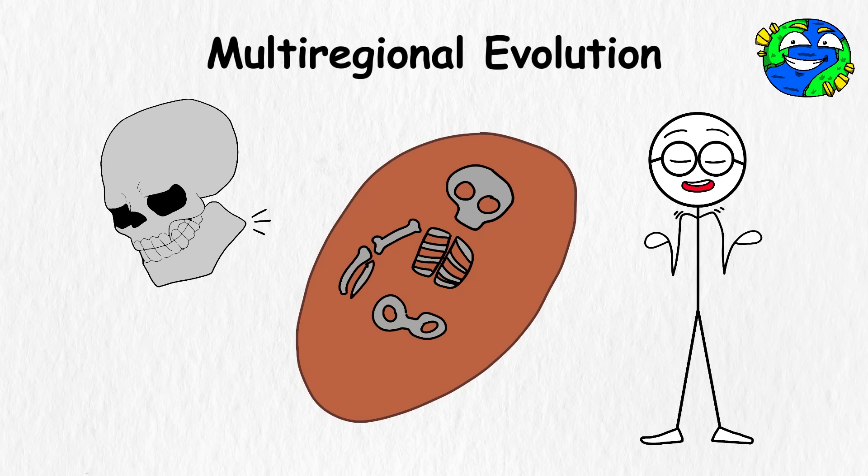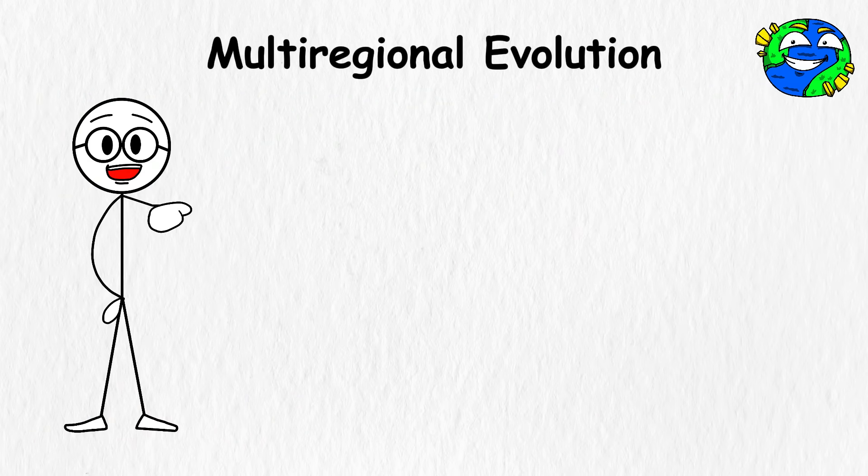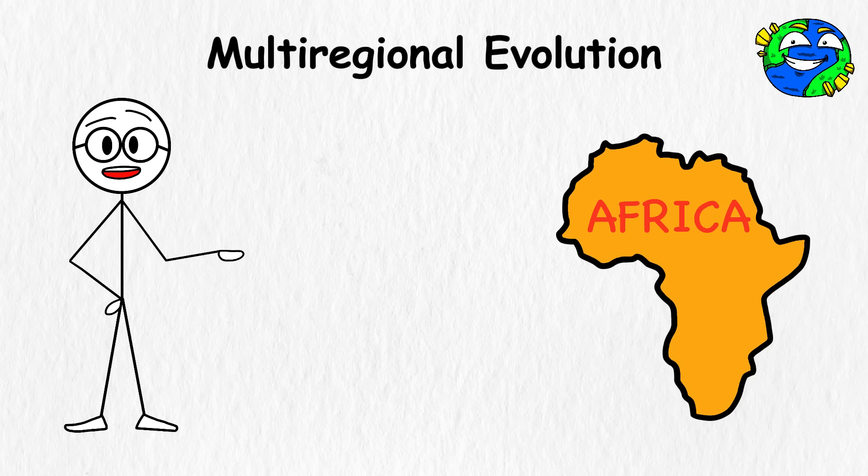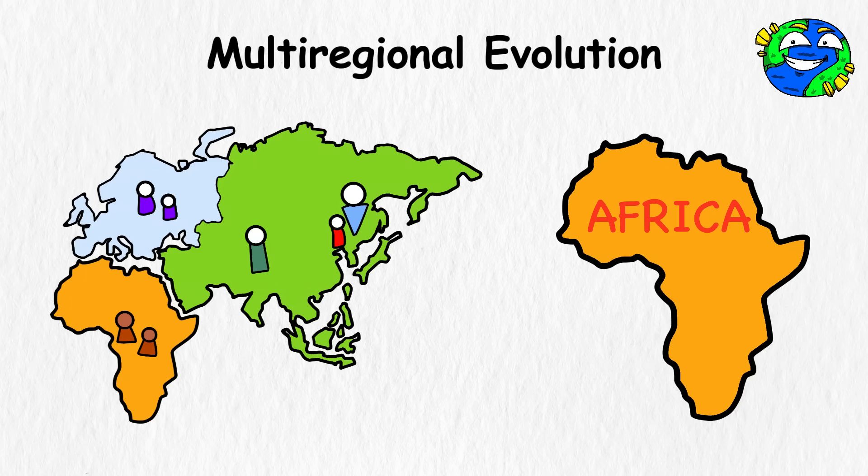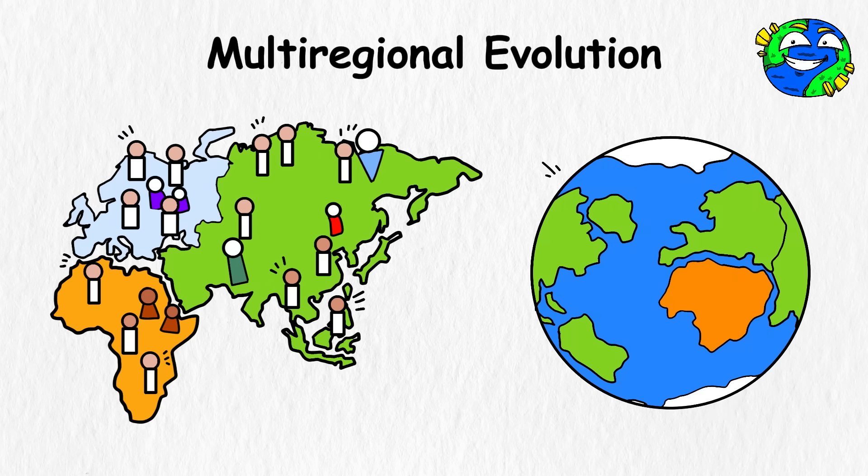Some fossils show it. Big jaws in one place, long limbs in another. It's like evolution was trying out different models before settling on one that could work almost anywhere. This theory doesn't erase the idea that humans started in Africa. It just says we didn't stop there. We kept moving, kept meeting, and kept becoming more like each other until the world started to look familiar.